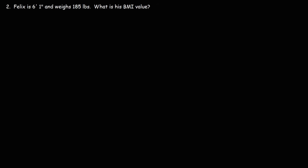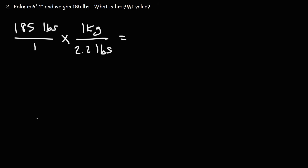Now let's work on a similar problem. Here we have Felix — he's 6'1" and weighs 185 pounds. What is his BMI? Let's start with his weight and convert it to kilograms. He's 185 pounds, and we know there are 2.2 pounds per kilogram, so we divide 185 by 2.2, giving 84.091 kilograms.